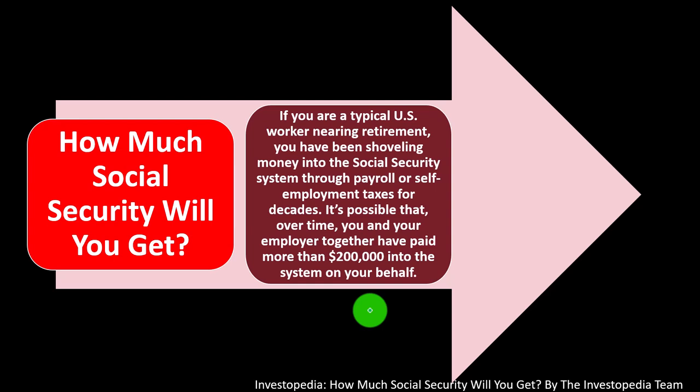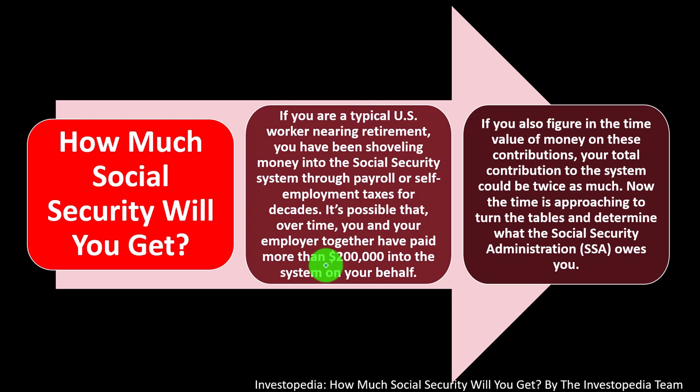How much social security will you get? If you are a typical U.S. worker nearing retirement, you have been shuffling money into the social security system through payroll or self-employment taxes for decades. It's a fairly large tax — that's why more and more we're thinking of it not as a safety net but as a program everybody should get access to. It's possible that over time, you and your employer together have paid more than $200,000 into the system on your behalf. If you factor in the time value of money on those contributions, your total contribution to the system could be twice as much.